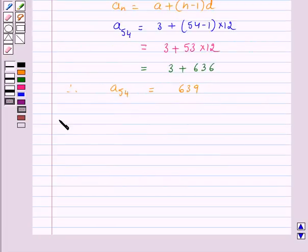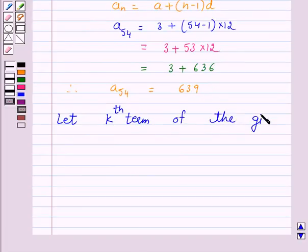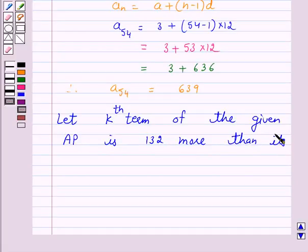Now, let the Kth term of the given AP be 132 more than its 54th term.